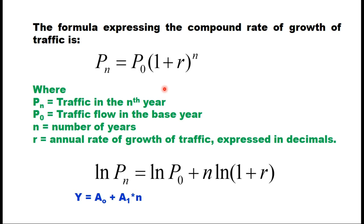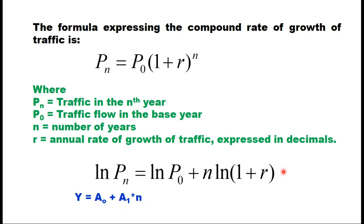The formula expressing the compound rate of growth of traffic is as follows. If you know the traffic flow in the base year, P0, then you can find out the traffic volume in the nth year by knowing the annual growth rate of traffic, r. If you take log of both sides, this equation becomes: log(Pn) = log(P0) + n × log(1 + r). Since P0 is known, this becomes a constant, and the equation can be rewritten as y = a0 + a1 × n, where y is log(Pn), a0 is log(P0), and a1 is log(1 + r).